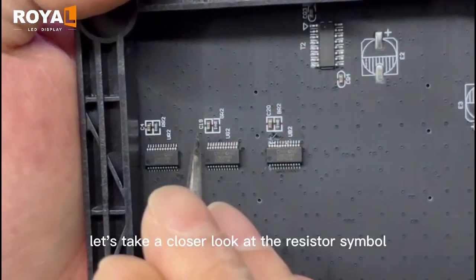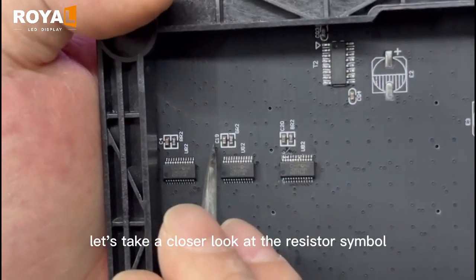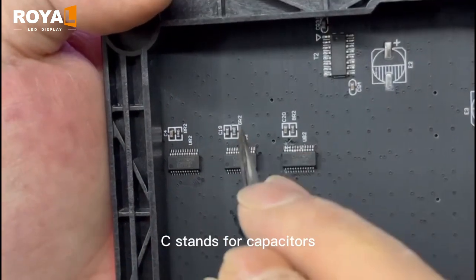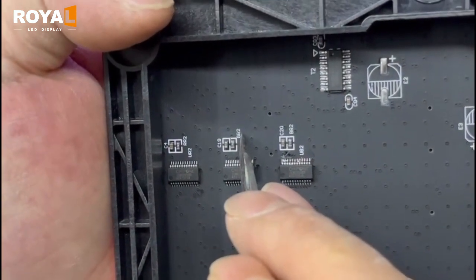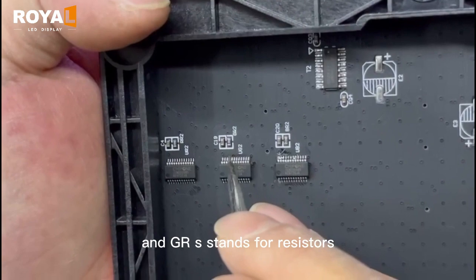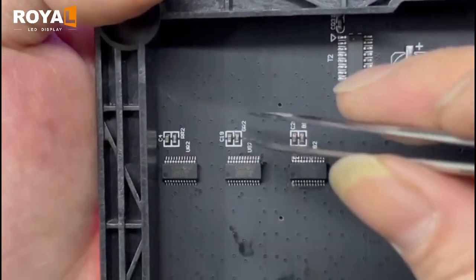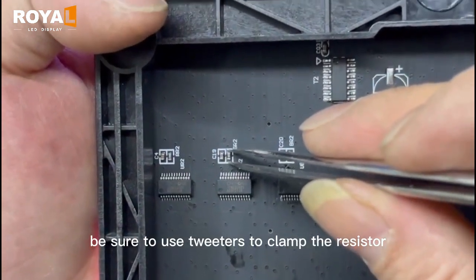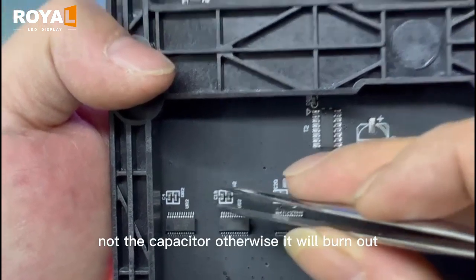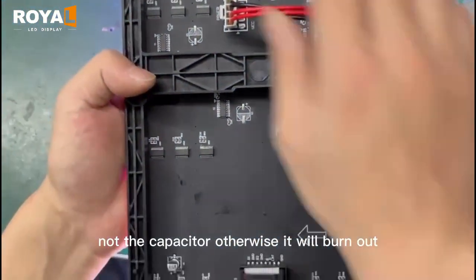Next, let's take a closer look at the resistor symbol. C stands for capacitors and GR stands for resistors. Be sure to use tweezers to clamp the resistor, not the capacitor, otherwise it will burn out.